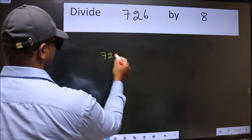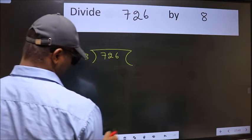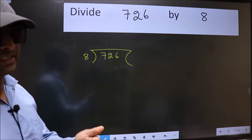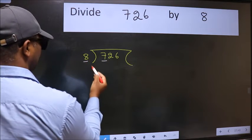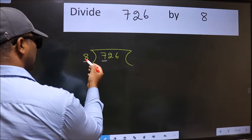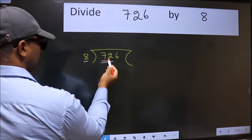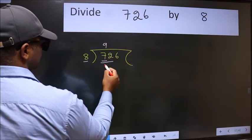726 here, 8 here. This is your step 1. Next, here we have 7 and here 8. 7 is smaller than 8, so take 2 numbers: 72. When do we get 72 in the 8 table? 8 nines are 72.